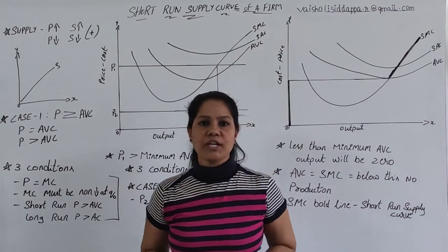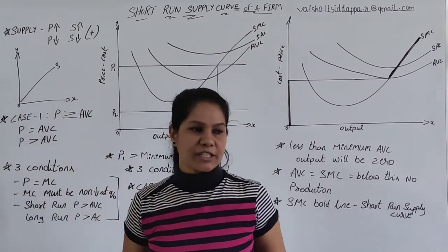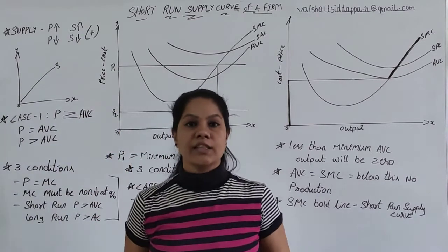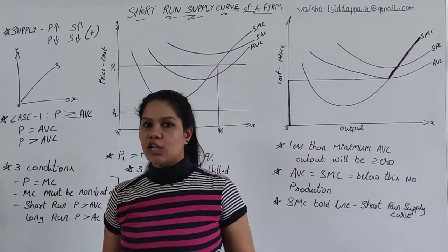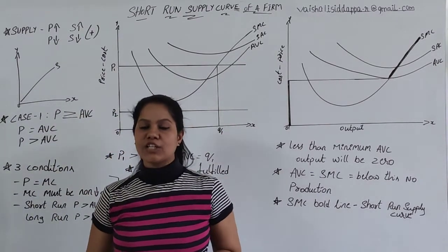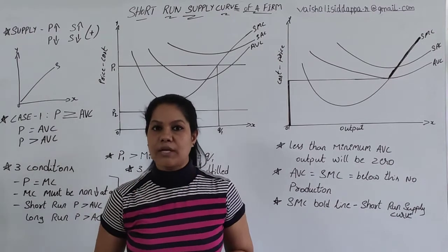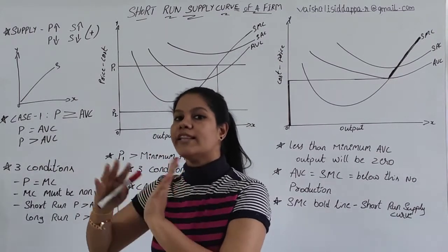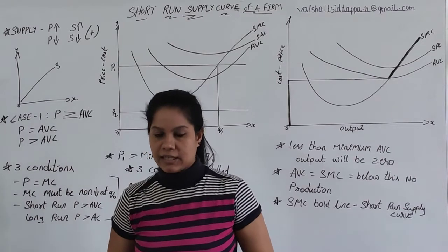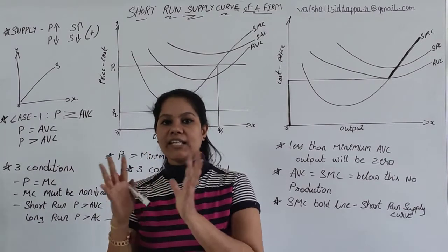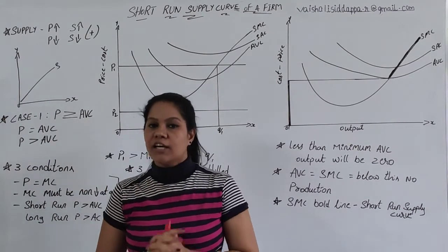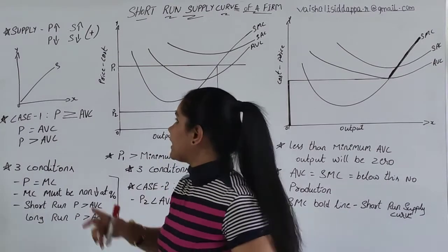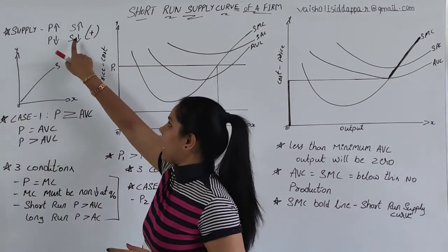Before talking about it, I have to explain supply theory — the law of supply. The law of supply talks about the relationship between price and supply, keeping all other determinants constant. The only two variables we are going to consider are price and supply.